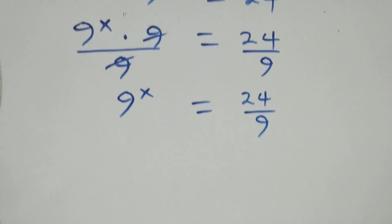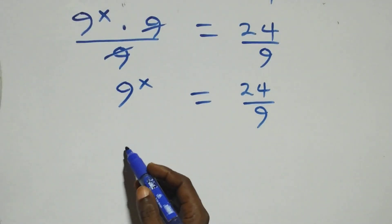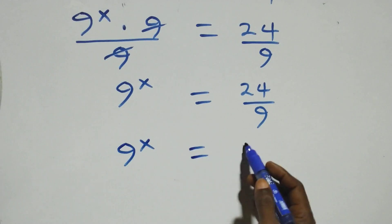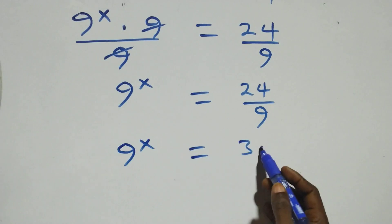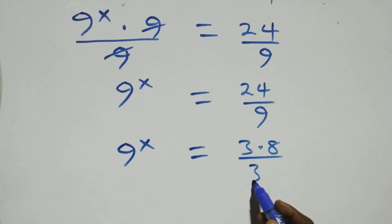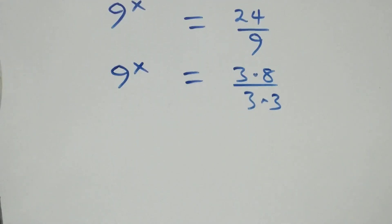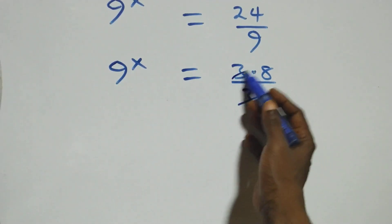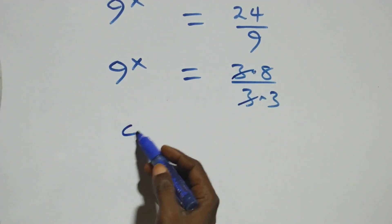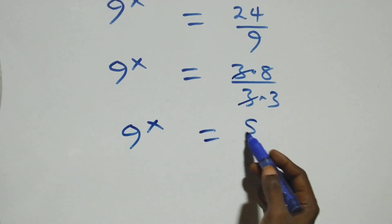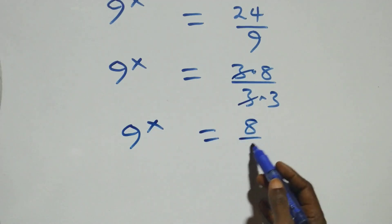The next step, we can write this as nine raised to the power x equals three times eight over three times three. The threes cancel each other, and we have nine raised to the power x equals eight over three.